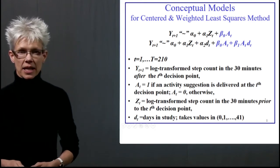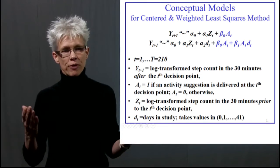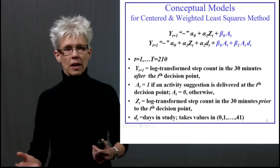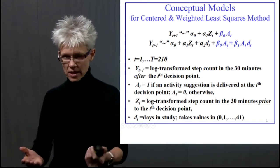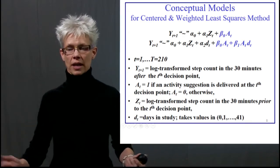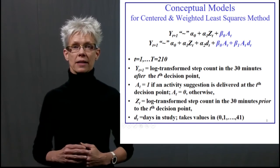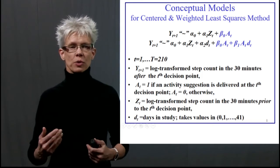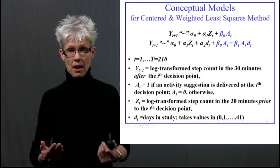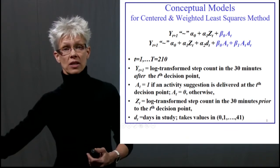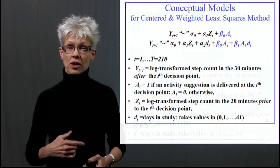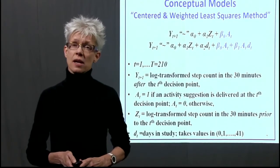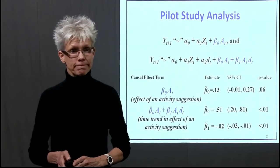Looking at the first analysis — the top equation — we focus on the coefficient beta zero. A_T is an indicator of treated versus not. Beta zero will tell us whether there was an effect at all, on average across the study, of getting a message versus not. That's the very first thing we want to ask. Then, because we're concerned about habituation and burden, the next question is whether that effect changes as the study progresses through time.